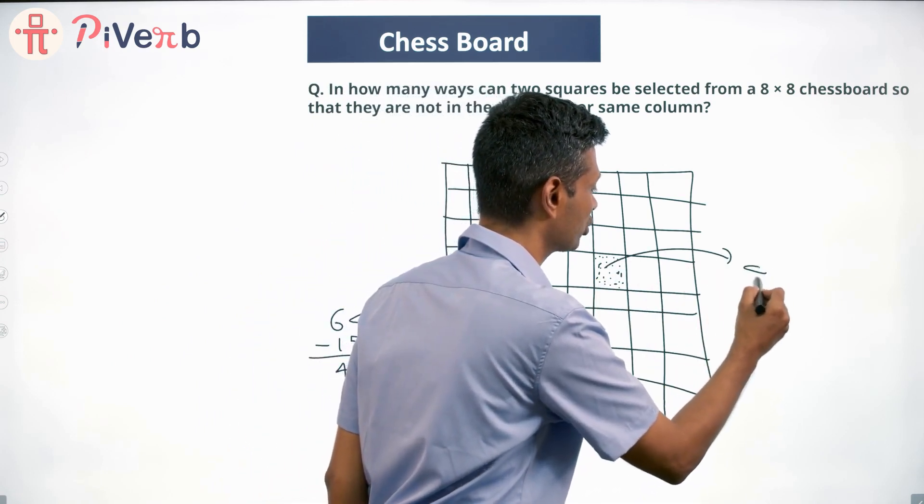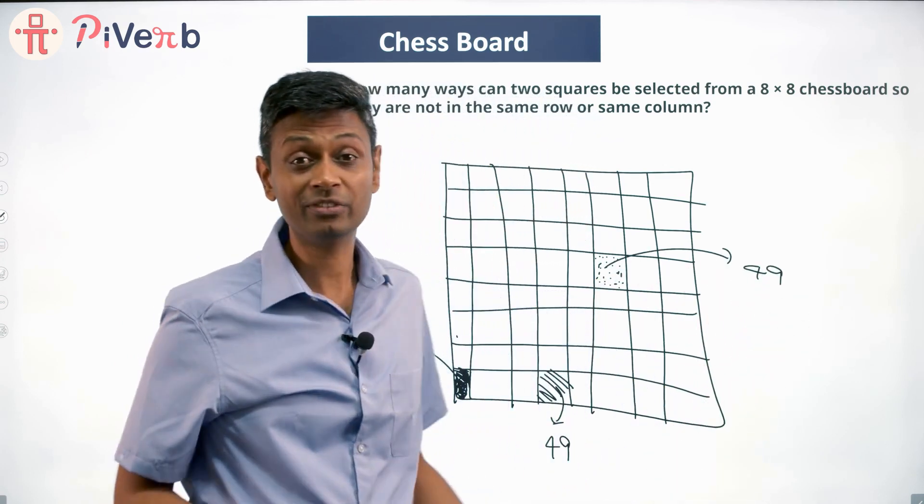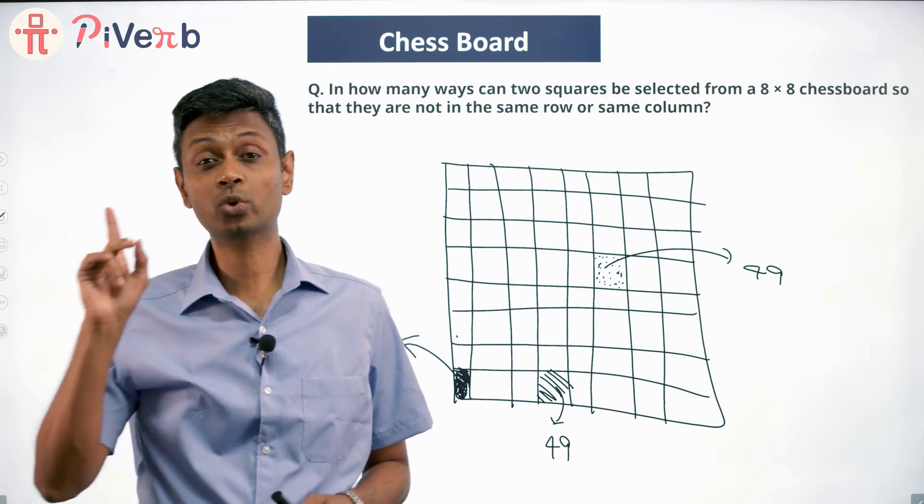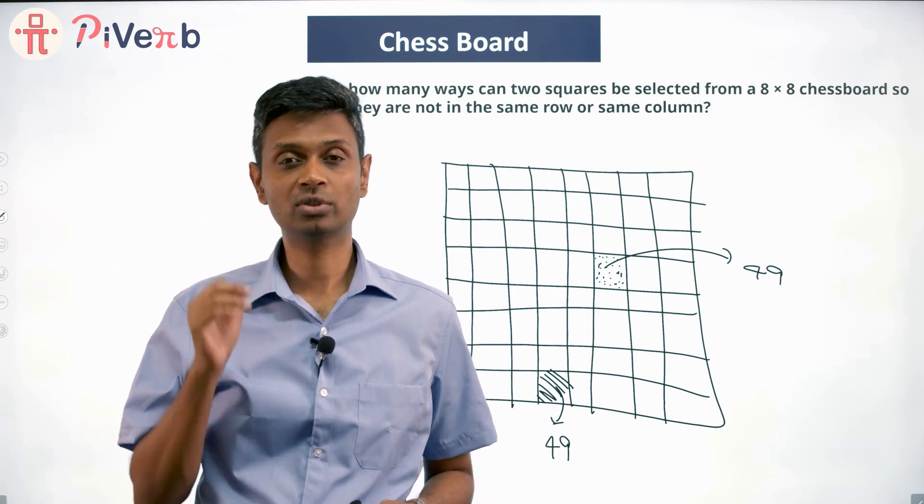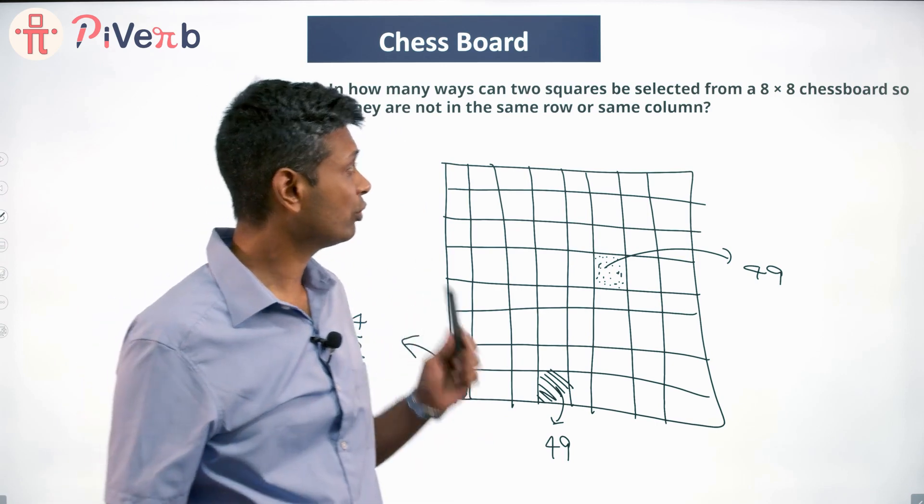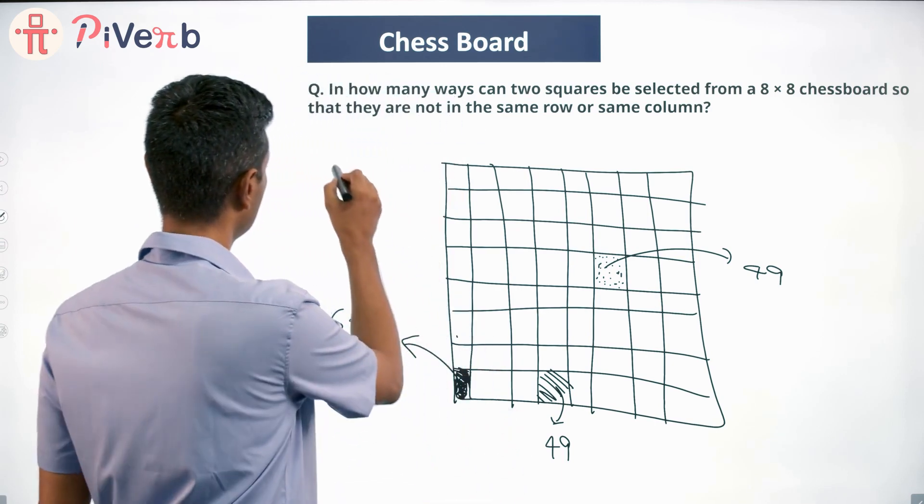If you think about this one, this row and this column are out. Seven plus seven out plus this one equals fifteen out. Again there are 49 squares. Lovely, this makes life easy. Whatever be the first square you select, you have 49 choices for the second square.